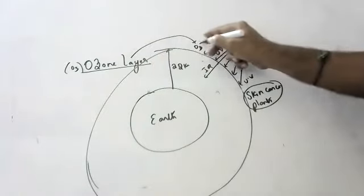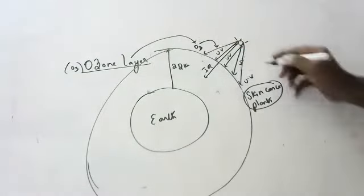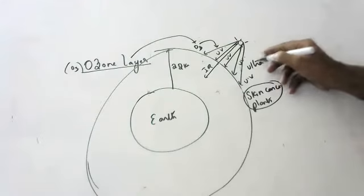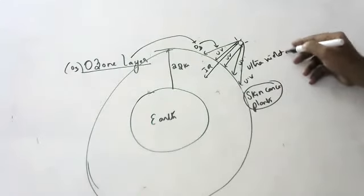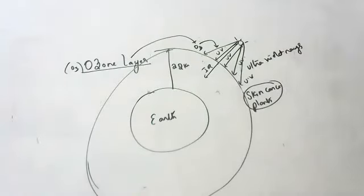What is the function of the ozone layer? It protects the Earth from UV rays. UV rays means ultraviolet rays. UV rays are very, very dangerous.